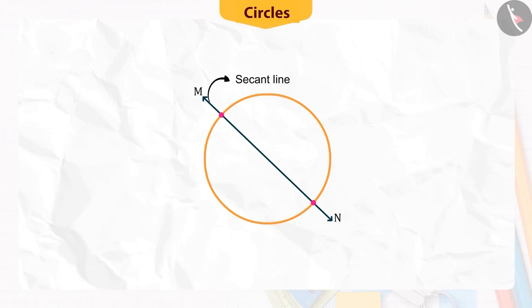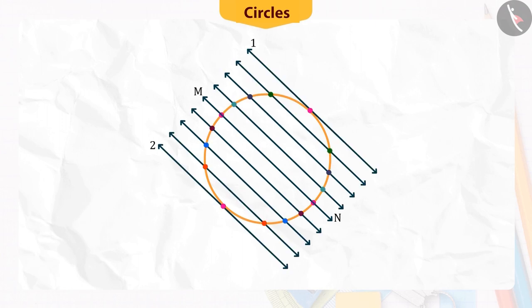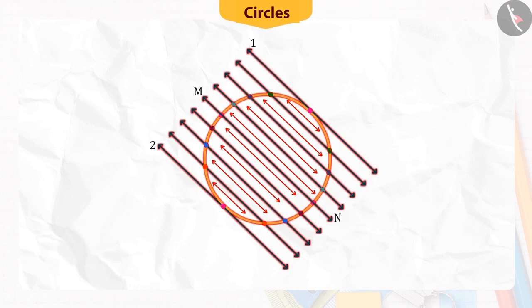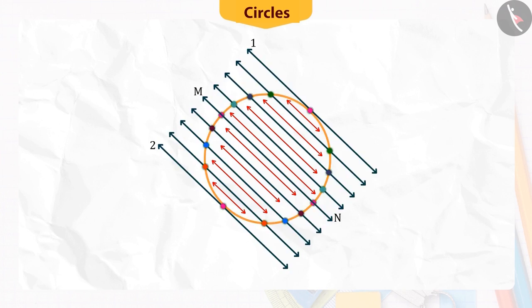First, let's draw a circle and a secant of a circle. Now, if various lines are drawn parallel to this secant on both the sides, you will find that, after some steps, as we are reaching towards the circumference of the circle, the length of the chord formed by the lines will gradually decrease, which means that the intersecting points of line and circle are coming closer.